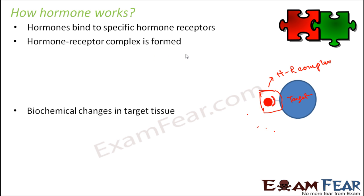Now what happens when the hormone-receptor complex is formed? After that, biochemical changes start taking place in the target tissue. As soon as this complex is formed, it will start bringing in changes inside these tissues. Biochemical changes means changes in the form of reactions — chemical reactions will start taking place inside the target tissue.